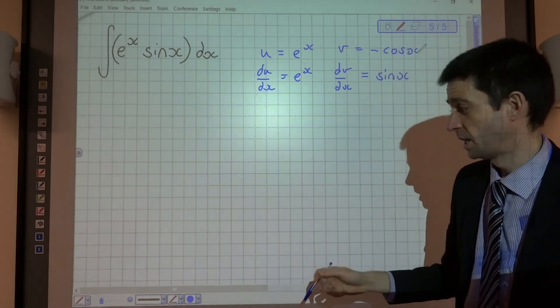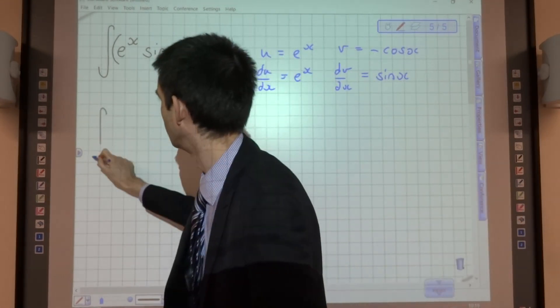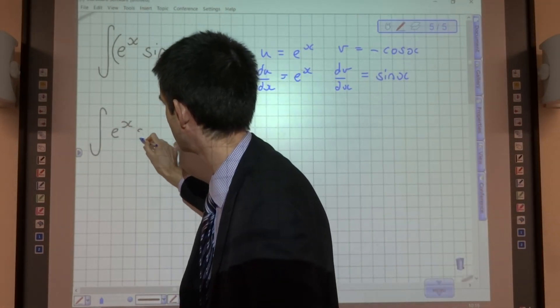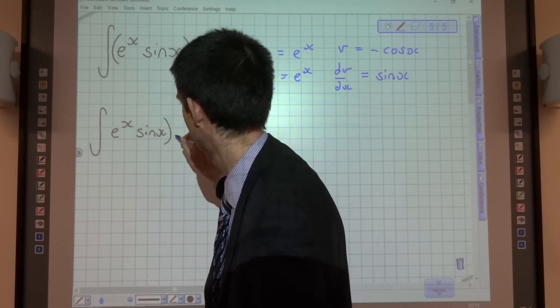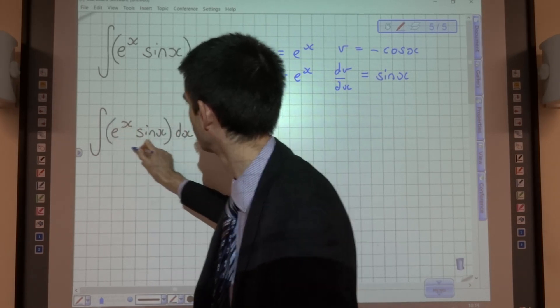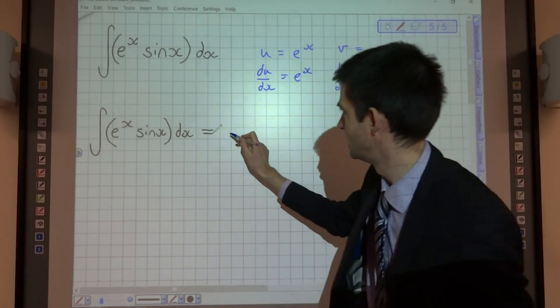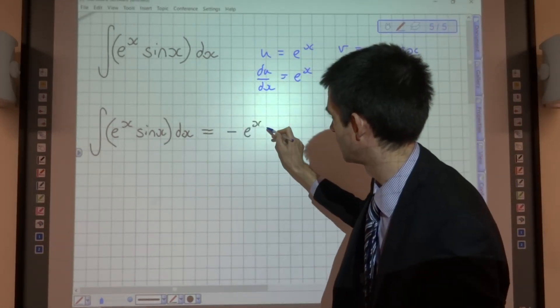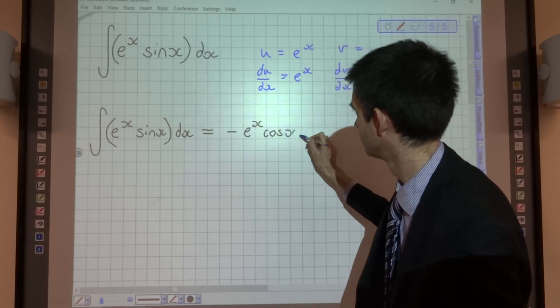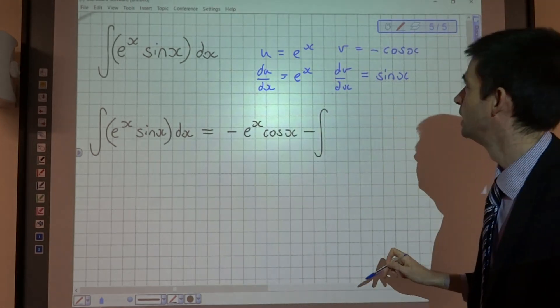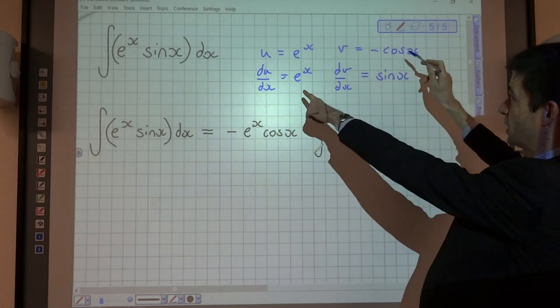So putting that into my integration by parts, I've got the integral of e to the x sin x. It's going to equal now uv, so I've got negative e to the x cos x minus the integral of v du by dx.